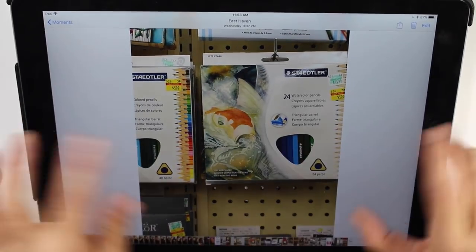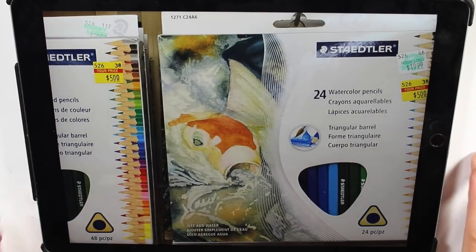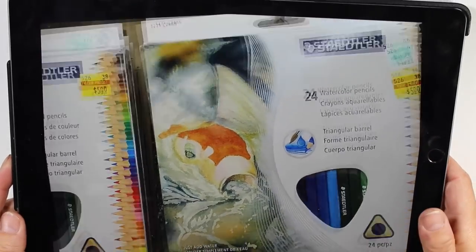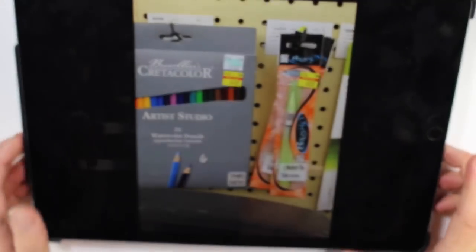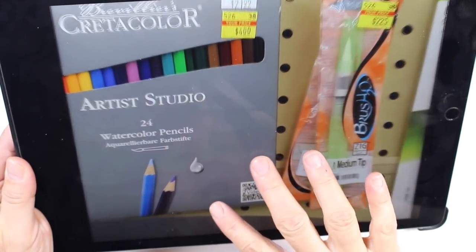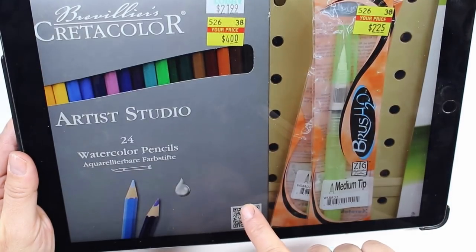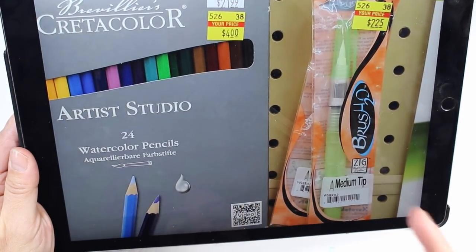Then they had all these, Staedtler, like the watercolor pencils, and all their pencils marked down from $20 to $5. Oh, sorry. My iPad's flipping. And they had a lot of these create-a-color things. They had pastel pencils, these watercolor pencils, $4 from $22. Again, I don't really need those.